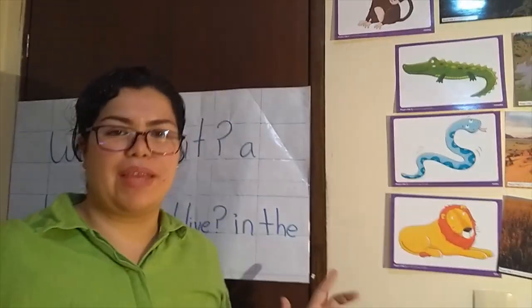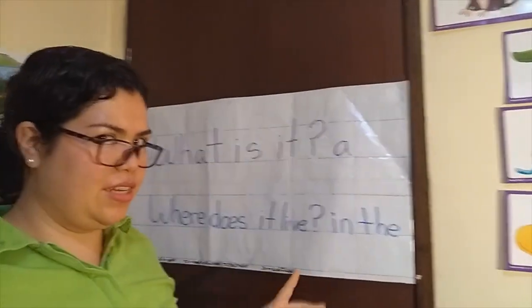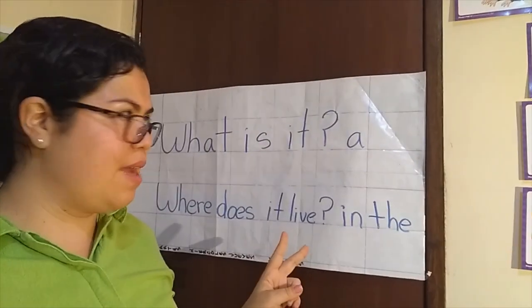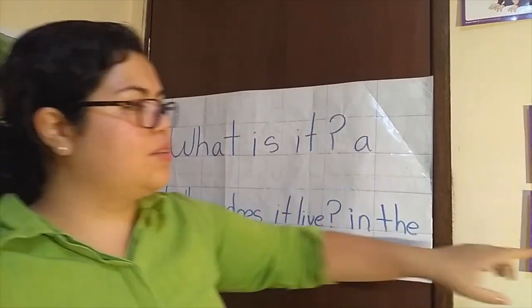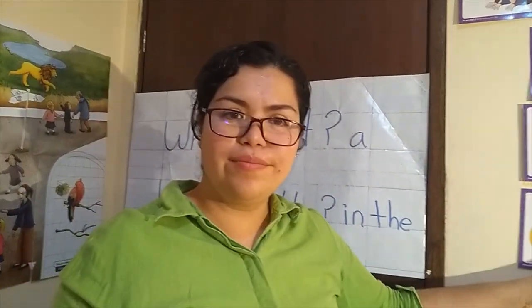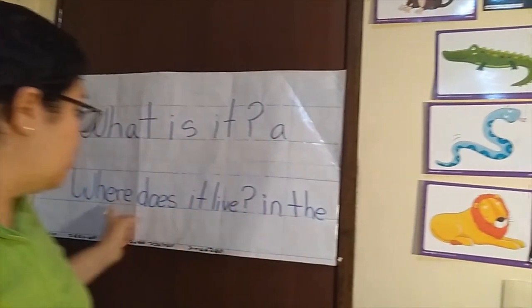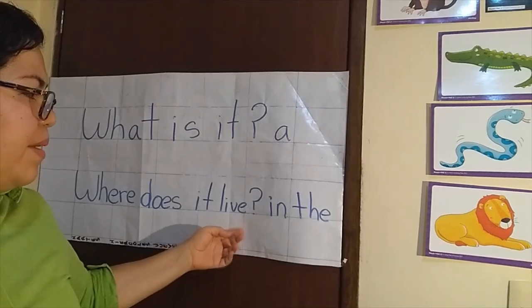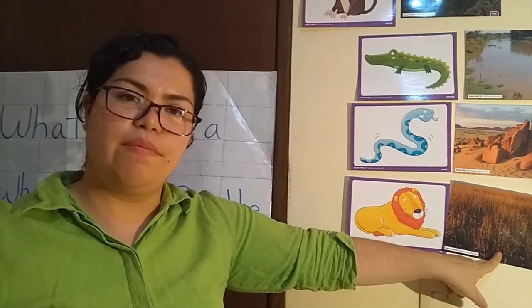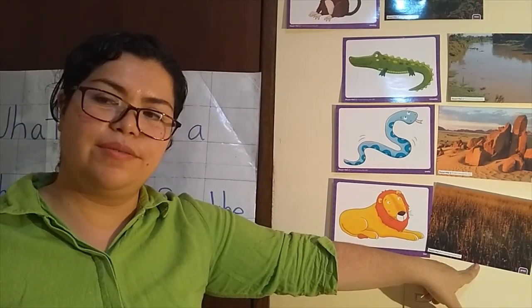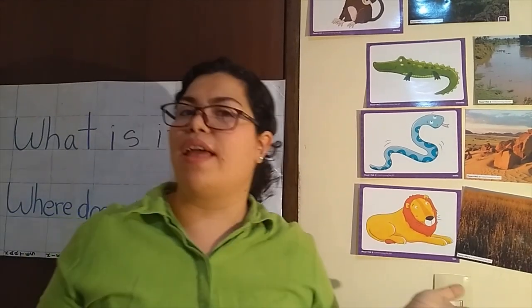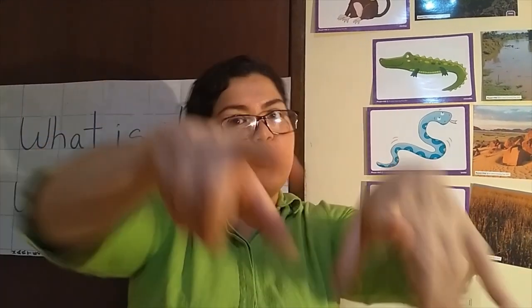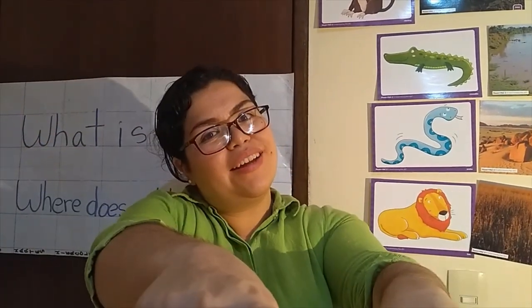Ahora una pequeña explicación en español breve. ¿Qué es esto? Es un león. ¿Y dónde vive? Vive en el pasto. Y la pregunta más importante es: Where do you live?